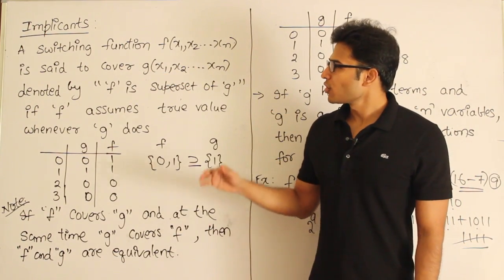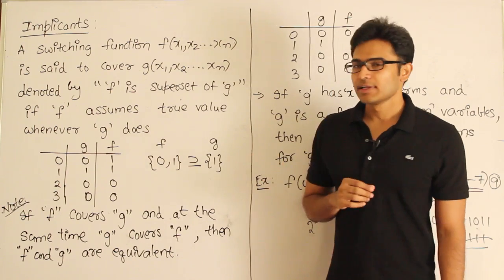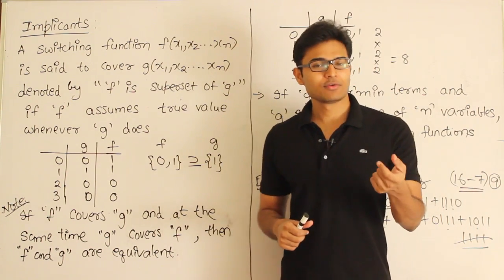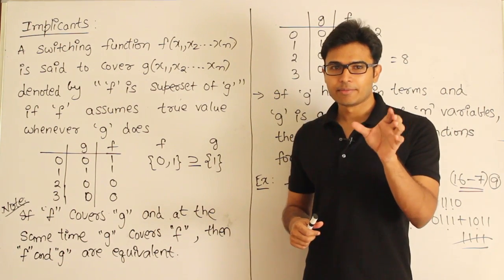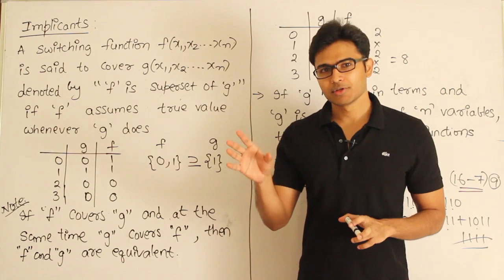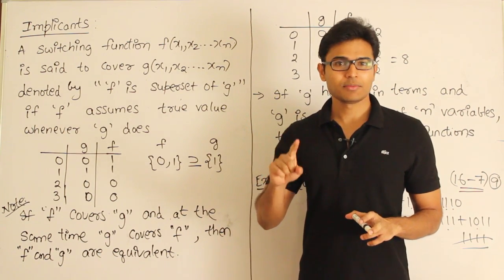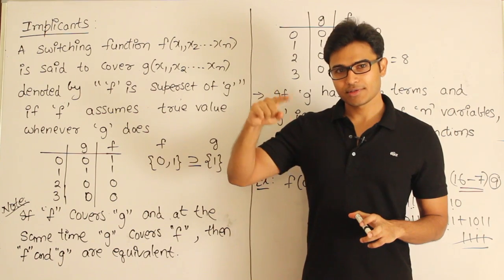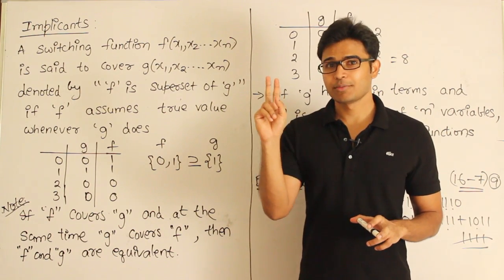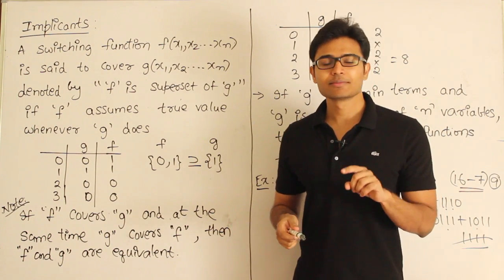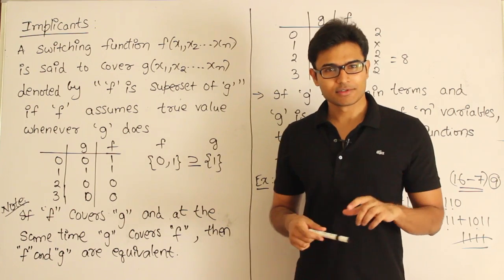Implicant. Before talking about implicants, let's talk about covering. Why are implicants important? When you are trying to derive the minimal expression for any given expression, we should find out all the subcubes which are called essential prime implicants. In order to find essential prime implicants, you should first know what an implicant is, second what a prime implicant is, and third what an essential prime implicant is, because these things play a key role in minimization.